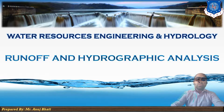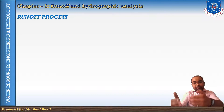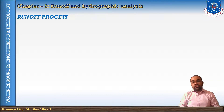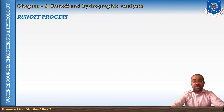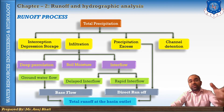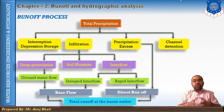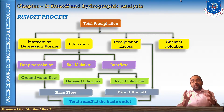For the rainfall-runoff process, before runoff occurs the precipitation must satisfy the demand of evaporation, interception, infiltration, then surface drainage, surface detention, and channel detentions. If we look at the process of rainfall to runoff, we distribute the total rainfall into different categories.